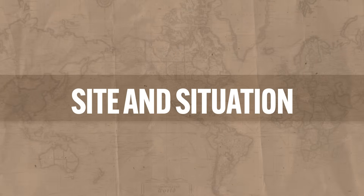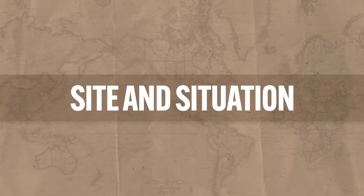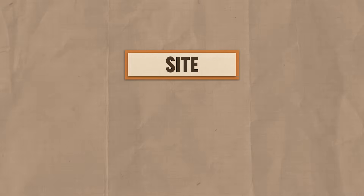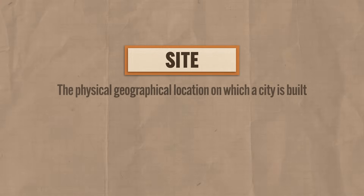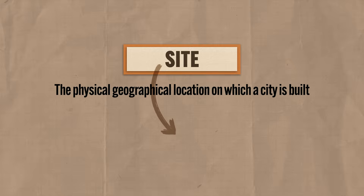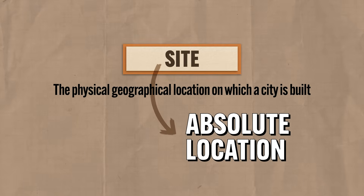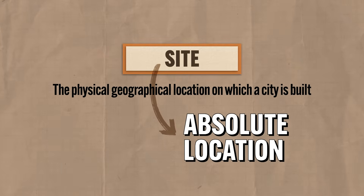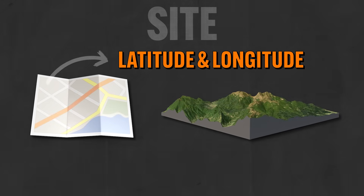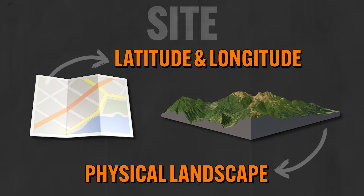By far the most important concept to understand when it comes to why cities are where they are is site and situation. Site refers to the physical geographical location on which a city is built — or reaching back to Unit 1, site refers to the absolute location of a city on the earth's surface. So site includes the latitude and longitude of a place and also the features of the physical landscape like rivers, mountains, or forests.